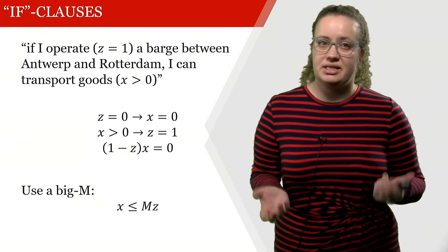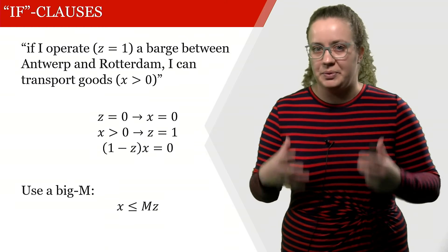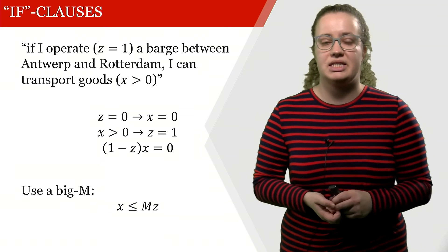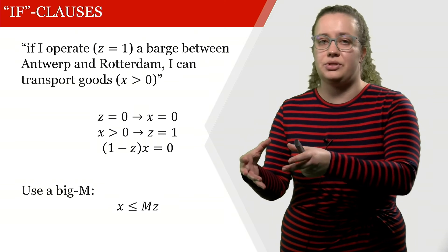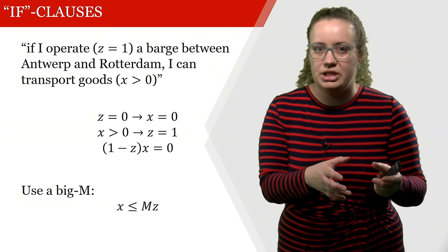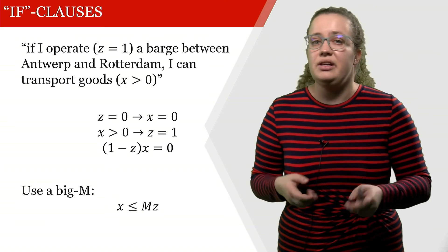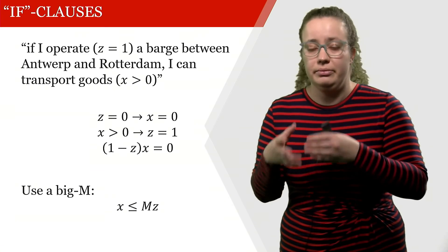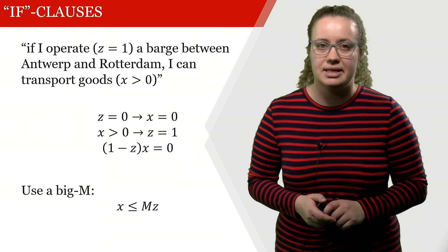So what we can do instead is we can use a big M. What we're saying is x has to be less than or equal to some big M multiplied with the z. So if z is 0, then the right hand side becomes 0 and the left hand side then also needs to be 0. However, if z is 1, then the right hand side becomes a very big value, M, and then x can take any value as long as it's less than M.